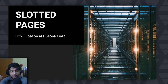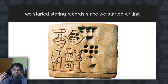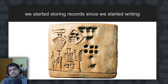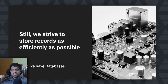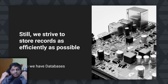Today we're going to talk about how databases store their data on the disk in terms of pages. Here is a clay tablet from 3400 BC — one of the earliest forms of written language. This tablet is not a poem or a story; it's a record of how much barley was collected. Since there was writing, human beings have been trying to store records, and today we store records in databases in terms of zeros and ones.